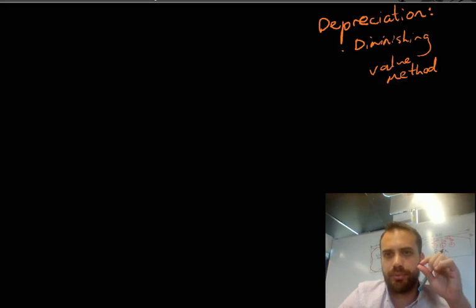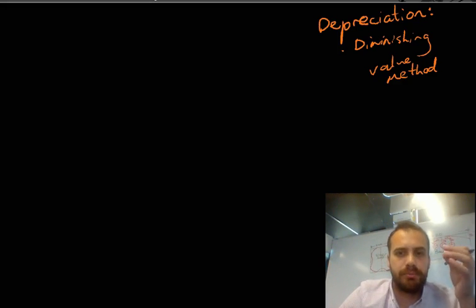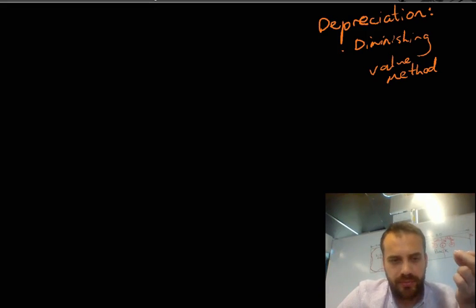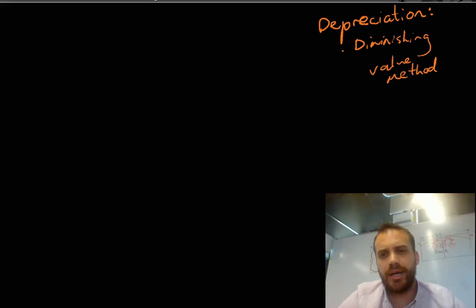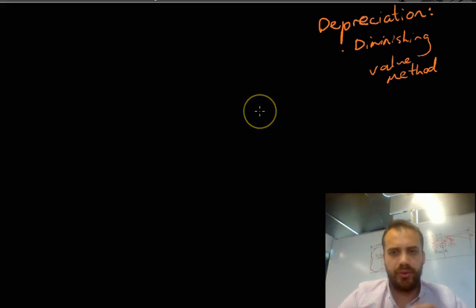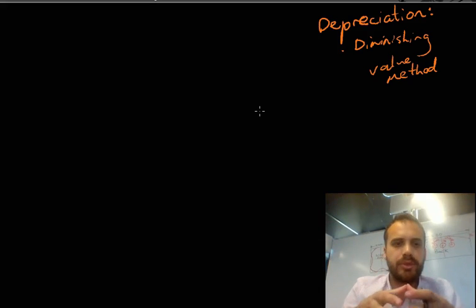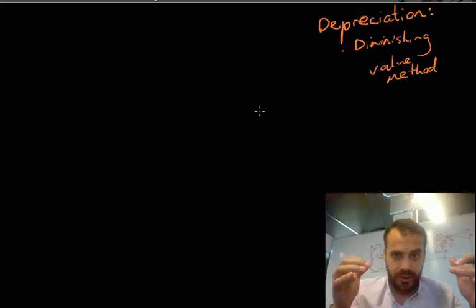Okay, so here's our second method. It's depreciation using the diminishing value method. Now, the diminishing value method, it's more complicated. As I've talked about before, it's where the item that you have is decreasing by a certain percentage every year.